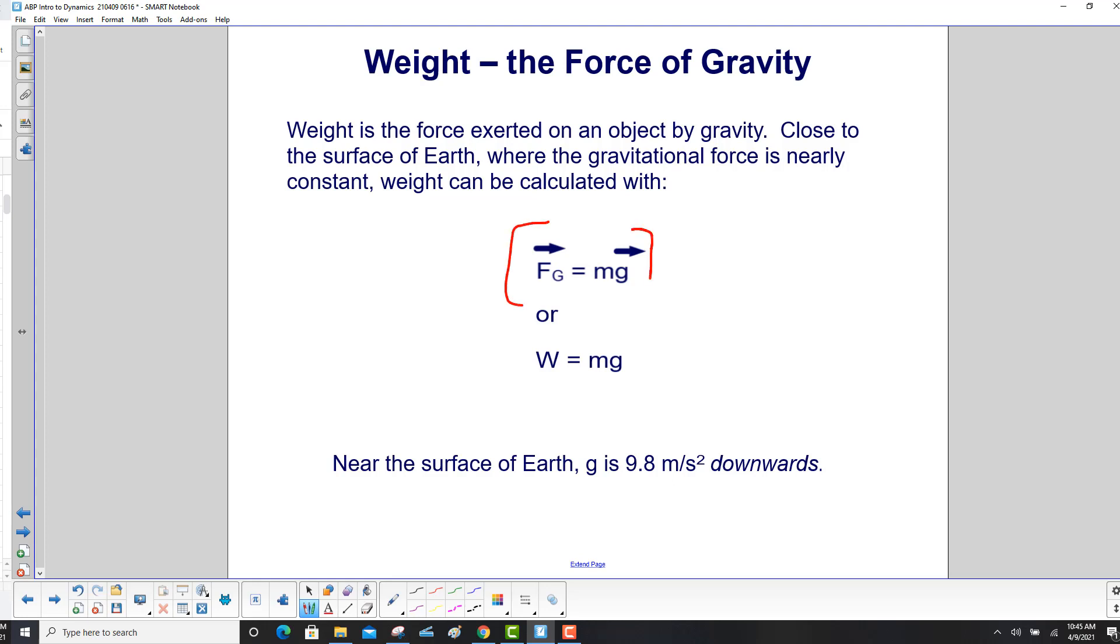With Newton's second law here, the force of gravity equals mg, or weight is just mg. Near the surface of the Earth, g is 9.8 meters per second squared downwards, one of the most important constants we have in physics.